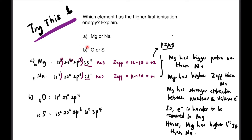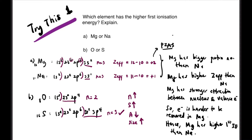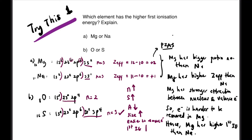For question B, we compare O with S. Electronic configuration: O is 1s² 2s² 2p⁴, and S is 1s² 2s² 2p⁶ 3s² 3p⁴. N equals 2 for oxygen and N equals 3 for sulfur. Since sulfur has a higher shell number, its shielding effect is higher, making the attraction between nucleus and valence electron weaker. So the size is larger for sulfur. When the size of the atom is larger, the electron is easier to remove from sulfur compared to oxygen. Less energy is required to remove the electron from sulfur, so sulfur has lower first IE. Therefore, oxygen has higher first IE compared to sulfur.